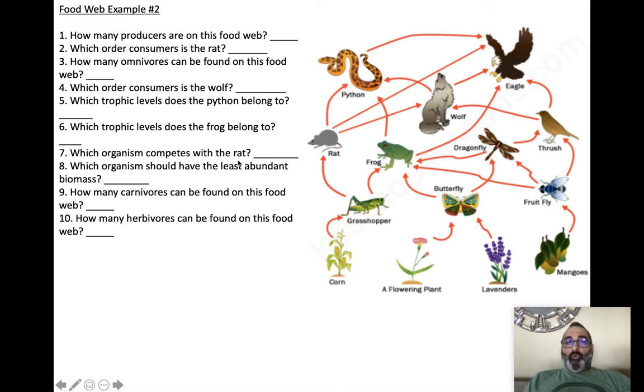Which organism competes with the rat? Well, the rat eats the grasshopper, and the frog eats the grasshopper. So the rat's competitor is the frog. Which organism should have the least abundant? Which means as you go up your feeding levels, you have less and less mass. So the very top of the food chain should have the least mass. So the answer to this one is the eagle. Least abundant biomass would be the eagle.